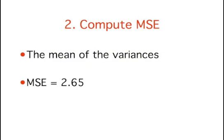Second, compute the mean square error, or MSE. This is simply the mean of the variances. Here, it is equal to 2.65.